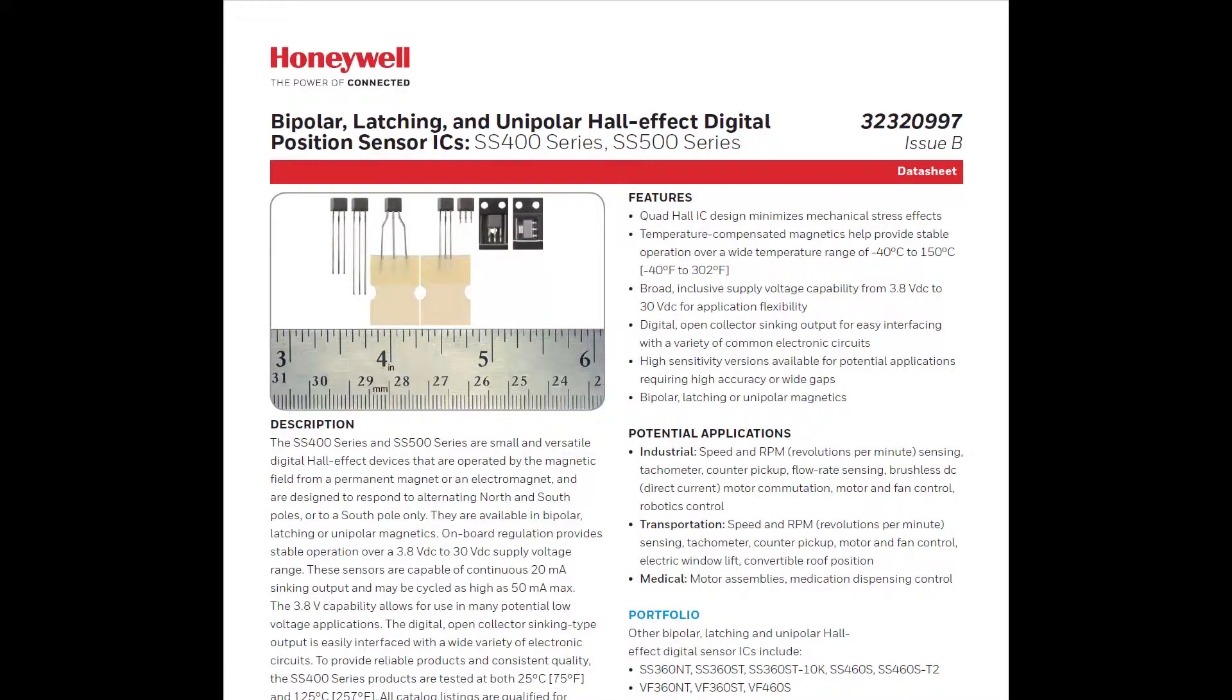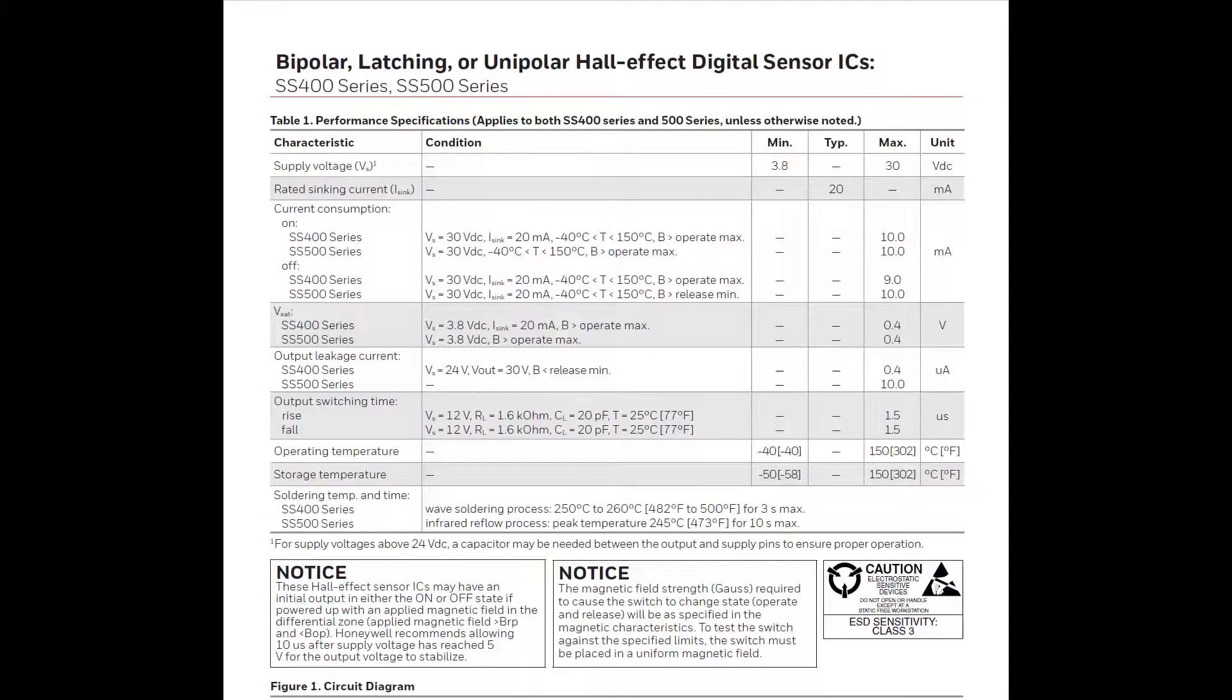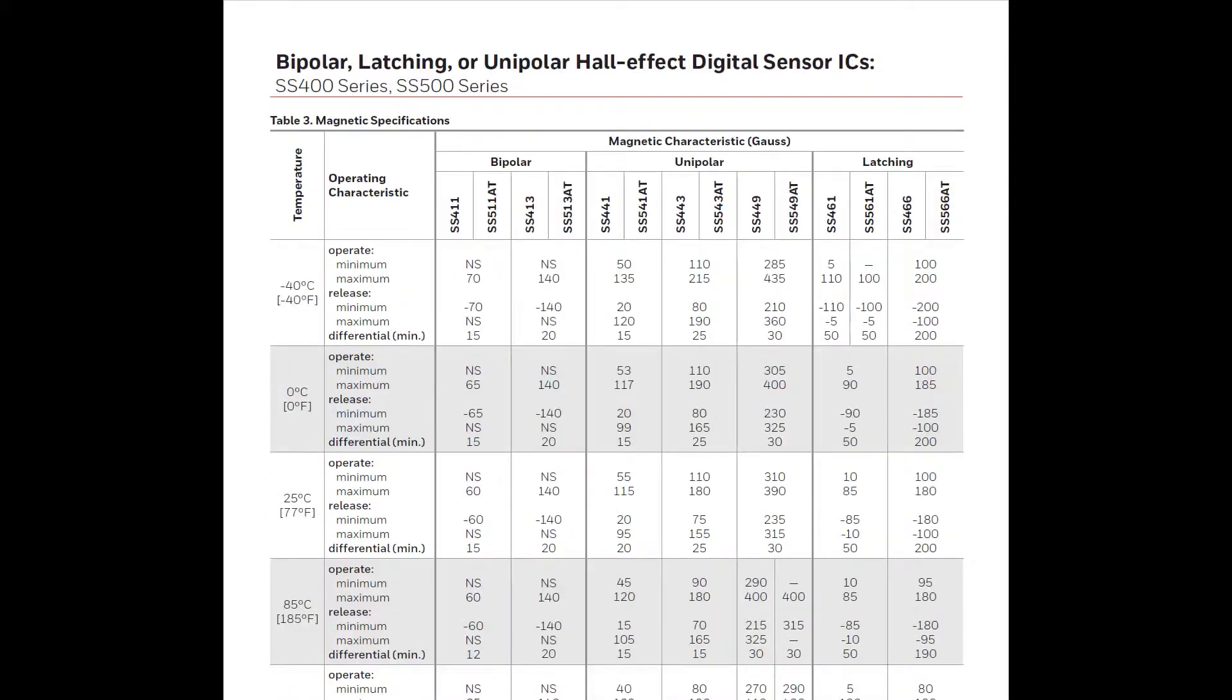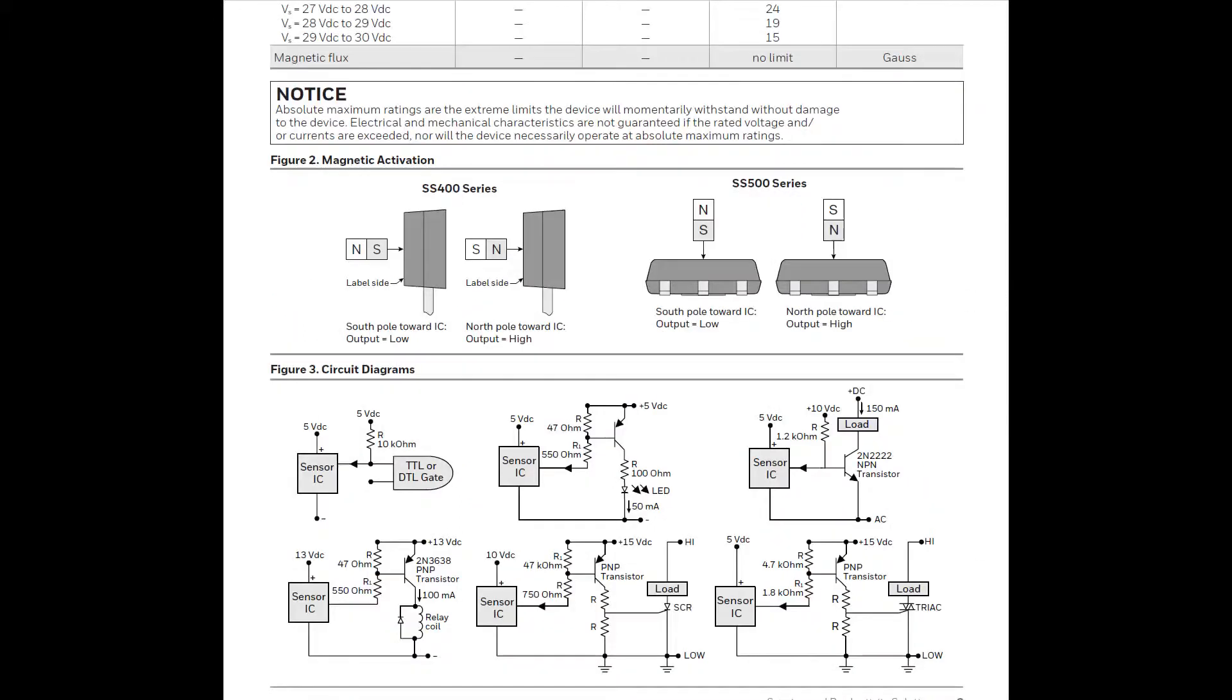The Hall effect switch that I'm proposing to use is the Honeywell SS4100 device. Which according to its spec will operate at a minimum of 55 gauss. So that should be fine. It's a simple 3 terminal device where you only have to supply plus 5 volts and 0 volts. And it produces a 5 volt digital output.